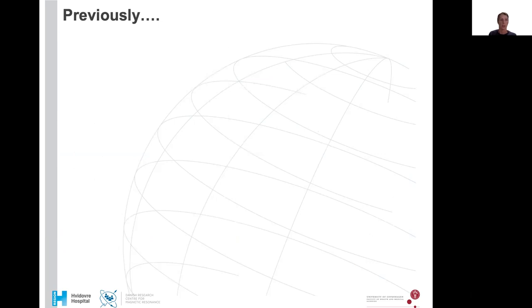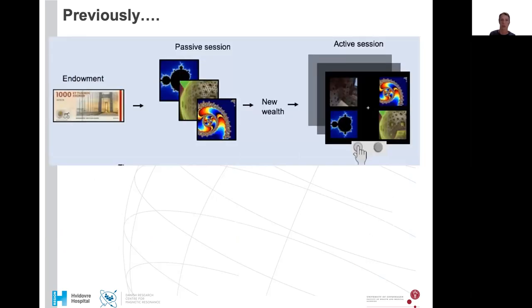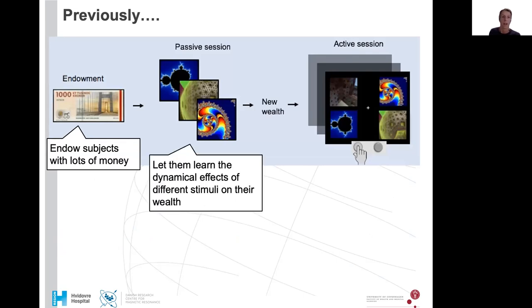So in our previous experiment, very shortly summarized, we endowed subjects with lots of money, 1,000 krona, which is about 165 US dollars. And then we let them learn the dynamical effects of different stimuli on their wealth. So they would lie in the scanner and just watch nine different stimuli being shown repeatedly. And whenever they saw one of these stimuli, something would happen to their wealth. One stimulus might always increase their wealth and another one might decrease it. And after this almost one hour of learning, they would have some new wealth.